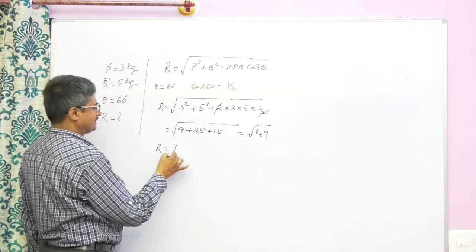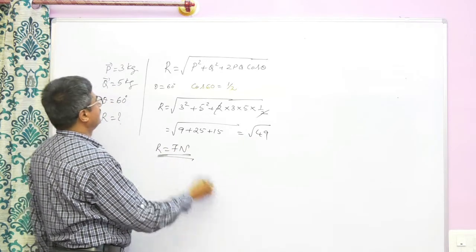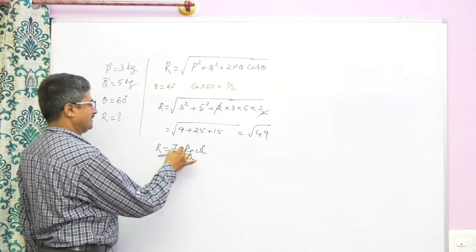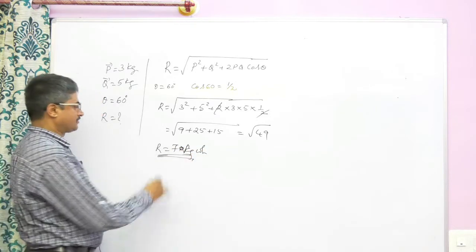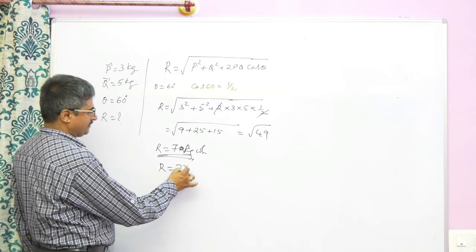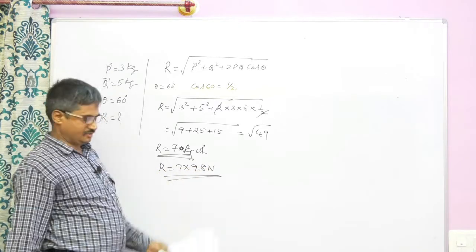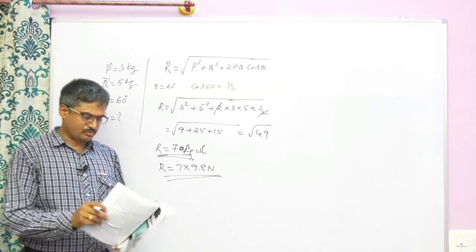Equals square root of 49. Therefore resultant is 7 kg weight, in terms of Newton r is 7 into 9.8 Newton. So this is the answer. Let us consider one more problem.